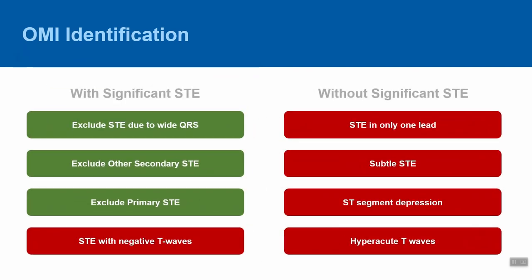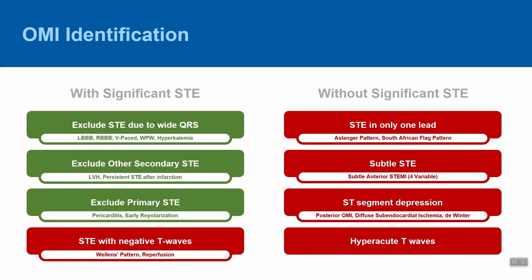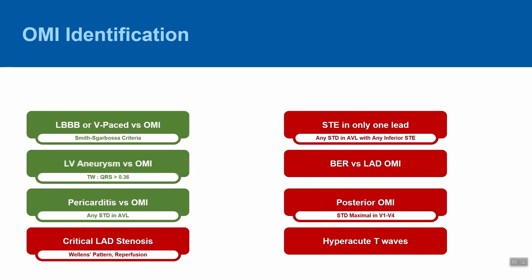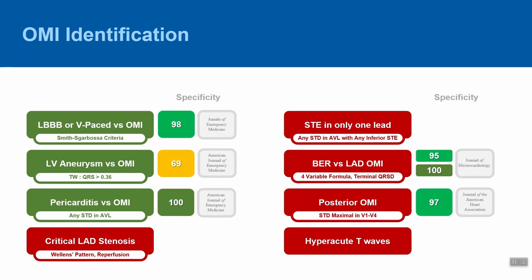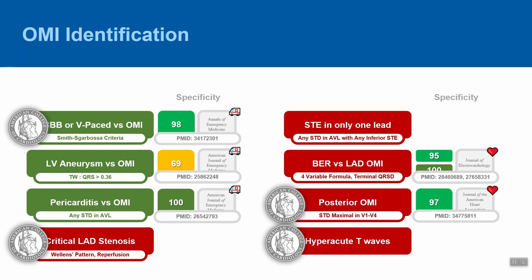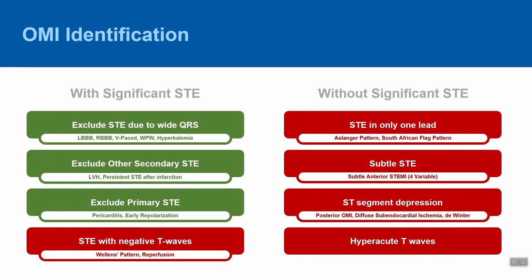Broadly, the steps can be broken down between those associated with significant ST elevation and those without. Because several conditions can result in ST elevation, the first three steps involve distinguishing OMIs from STEMI mimics, while the remaining steps involve identifying more subtle but specific changes associated with OMI. These rules are highly specific, and having originated in emergency medicine, many validation studies have been published in emergency medicine journals. The ACC has also endorsed several in their 2022 consensus statement for managing patients with chest pain in the ED. Steps 1, 2, and 3 are to rule out STEMI mimics.